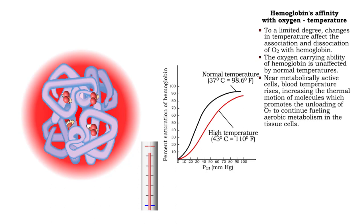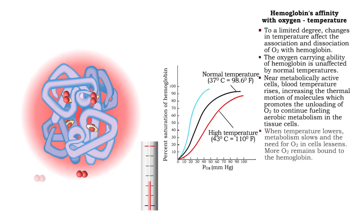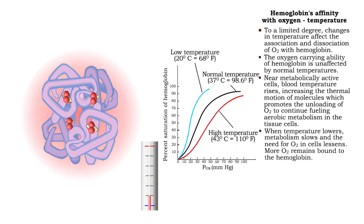The increased temperature promotes unloading of oxygen to continue fueling aerobic metabolism. When temperatures lower, metabolism slows and the need for oxygen in cells lessens. More oxygen remains bound to the hemoglobin.